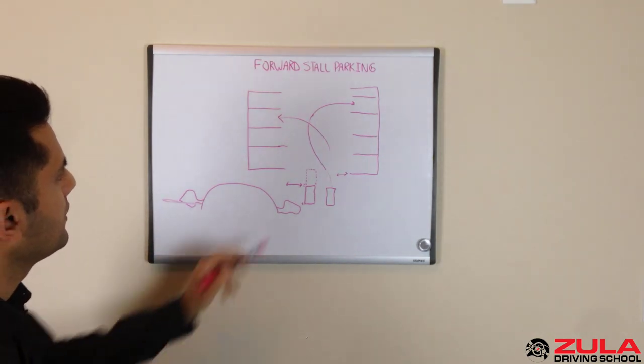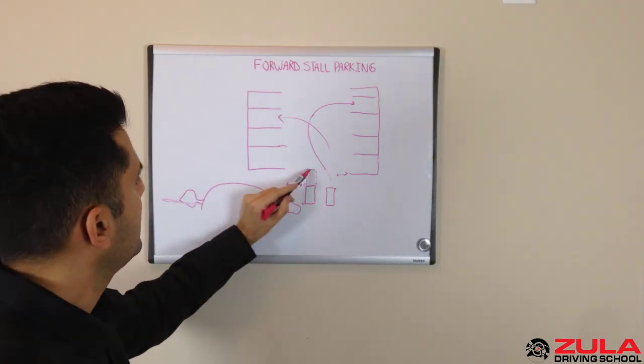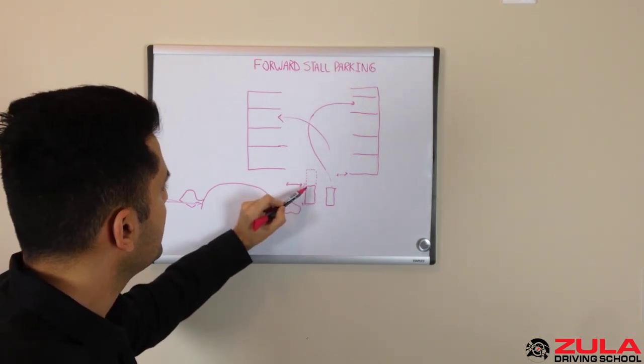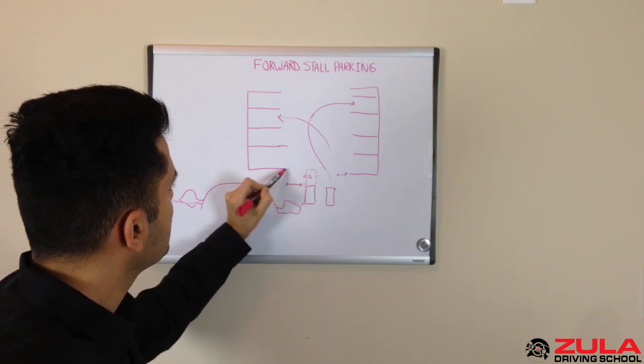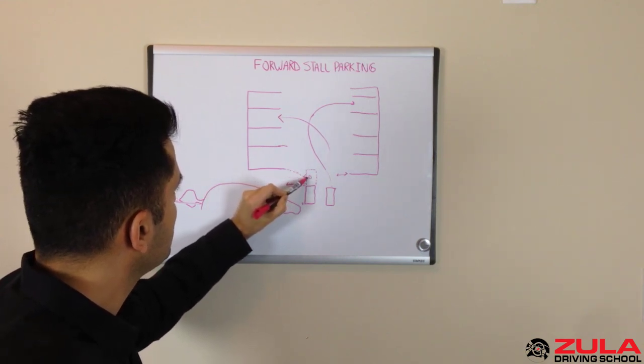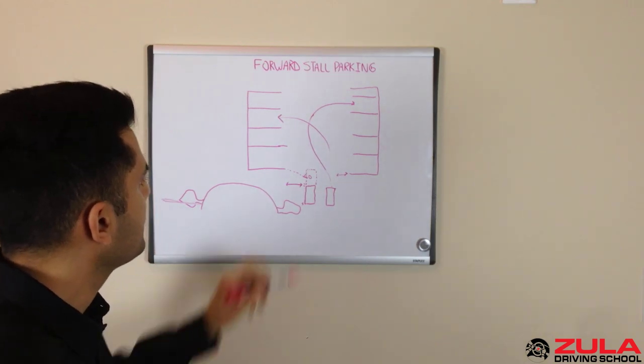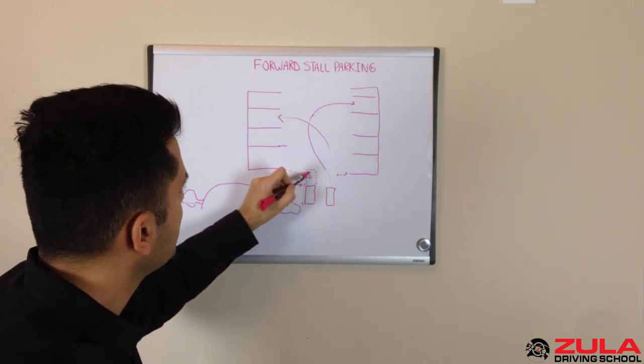Then you know that the front of your car is in line with it at the moment. So it's kind of a trick of the eye. When you're here from where you're sitting, this line is going to look like it's under this mirror and that's when you know, okay I need to start turning this steering wheel.